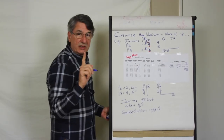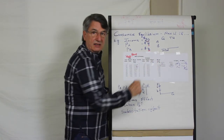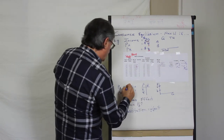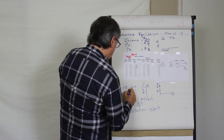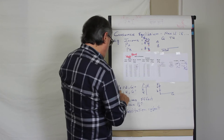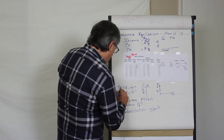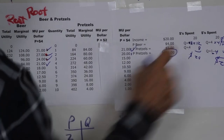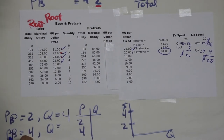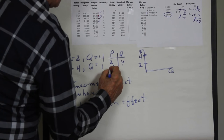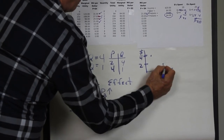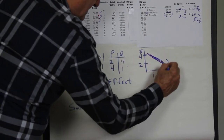The only thing that changed was the price of pretzels, and sure enough this consumer buys less — 4 pretzels when the price was $2, but only 1 pretzel when the price is $4. If we organize this: price $2 → quantity 4; price $4 → quantity 1. This is a demand relationship. The law of demand says that when the price of a good goes up, the quantity purchased will go down, and there are two reasons for this decrease: the income effect and the substitution effect of a price change.